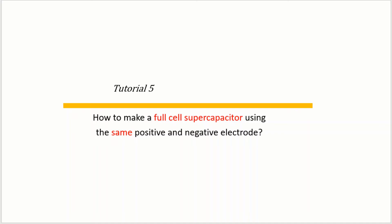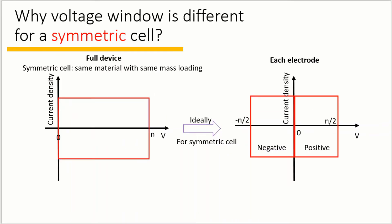In this tutorial, I will give a short presentation on how to make a full cell supercapacitor using the same positive and negative electrode. A symmetric full cell means the cell uses the same material with the same mass loading for both positive and negative electrode.